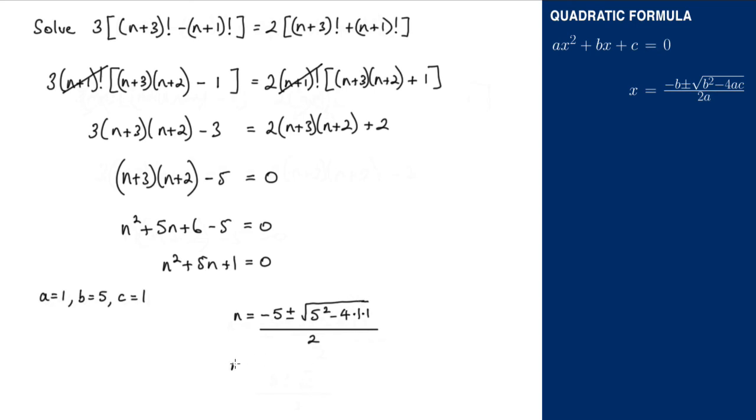So n equals negative 5 plus or minus the square root of 25 minus 4 is 21, and that is all over 2.